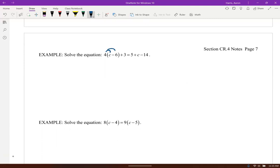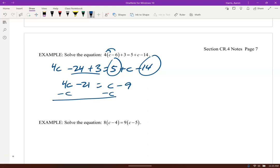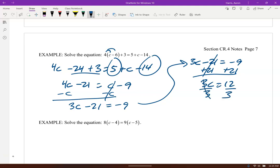And let's distribute. Now we've got some more multi-steps here. 4c, 4 times negative 6, so minus 24, plus 3 equals 5, plus c minus 14. Notice on this side I can combine those like terms. Over here I've got 5 minus 14, so I have c minus 9. And now let's get all our c's on one side. So 4c minus 1c is 3c minus 21 equals negative 9. Now let's add 21. So I've got negative 9 plus 21 gives us 12. And then let's divide by 3 on both sides. And then we're all done.